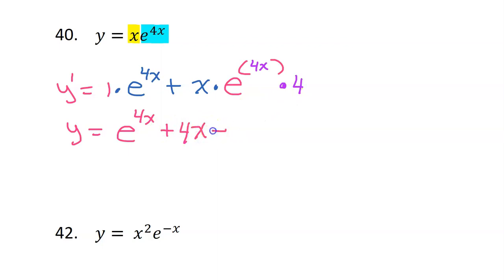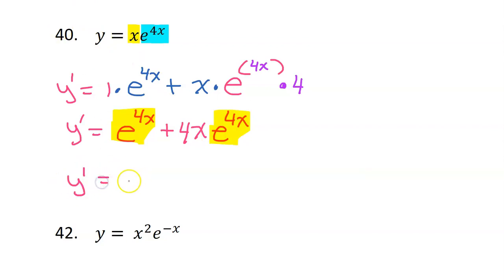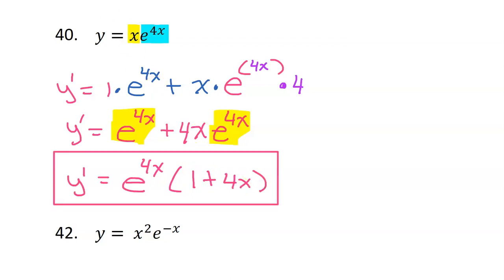So the best we can really do is just write e to the 4x plus — let's put this 4 in the front — so we will have 4x e to the 4x. I see that we have this e to the 4x that is common to both terms, so very often you will see that brought out outside of the parentheses, like this: e to the 4x times 1 plus 4x. If this were a multiple choice question, this is probably the way you would see the answer, but if you have a free response question, you can leave it in either of the previous two forms.